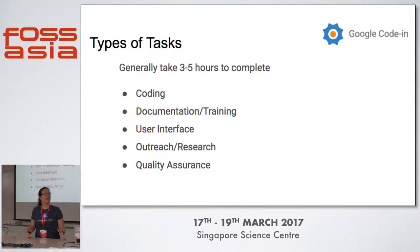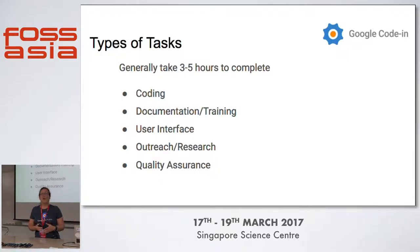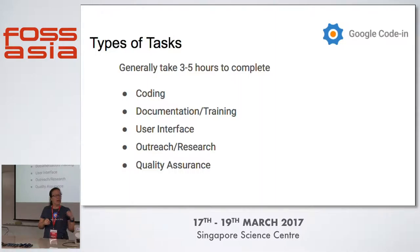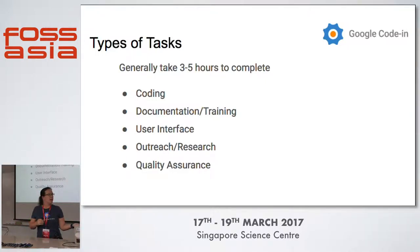There are so many other skills needed for the success of any software project. We have tasks that are coding in a variety of languages. We also have documentation tasks, training tasks — maybe it's making a video about some aspect of the software or telling people what FOSS Asia does. FOSS Asia is actually one of our organizations that participates in GCI and GSOC. We also have user interface tasks, outreach tasks, research tasks, and quality assurance — which can be finding bugs, fixing bugs, that kind of thing.